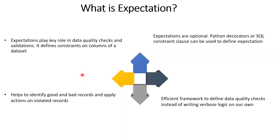What is an expectation? Expectation is one of the features provided by Delta Live Table in Databricks to perform data quality and validation checks. In any data engineering project, validating the data is a very important step. We have to identify corrupted or bad records and put proper mechanisms to handle them. With the help of expectations, we can define different constraints on columns of a dataset — tables or views containing a list of columns — and put certain data validation checks on those columns. Expectations are optional, but even so, they are very commonly used in all Delta Live Table developments.